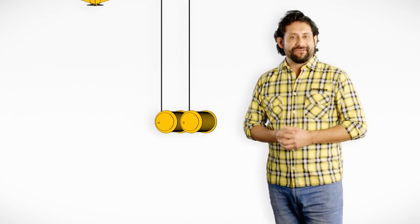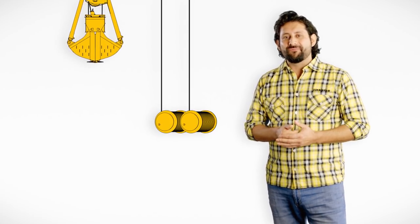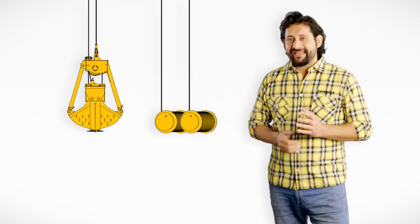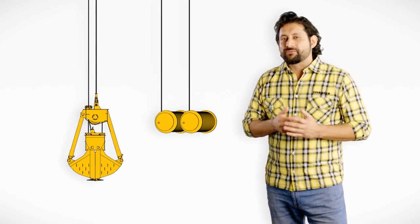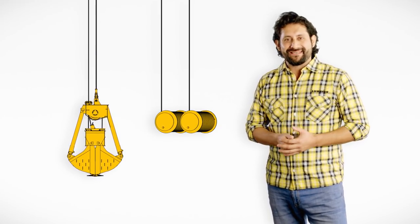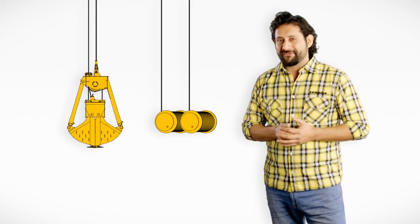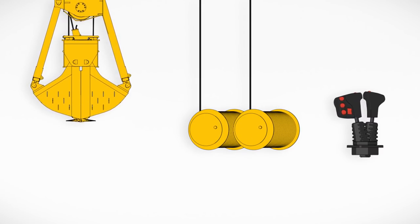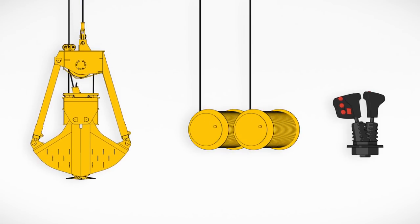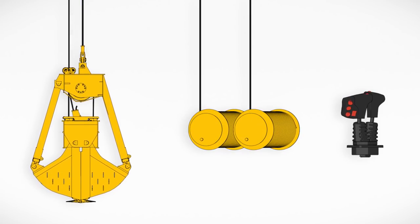The automatic winch synchronization ensures coordinated movement of both the holding and the closing winches, as well as an even distribution of forces when hoisting with full load. The grab can therefore be lifted using only one joystick. This avoids unintentional opening and closing of the grab.